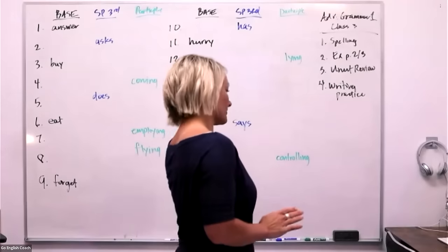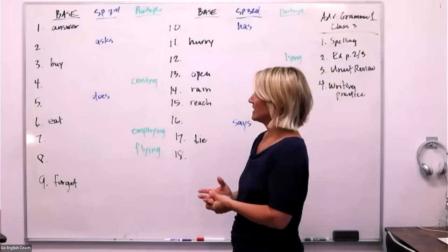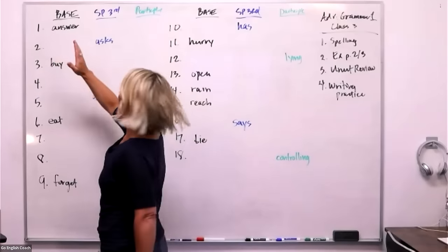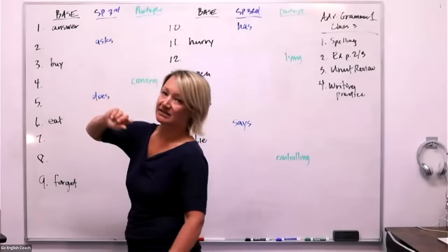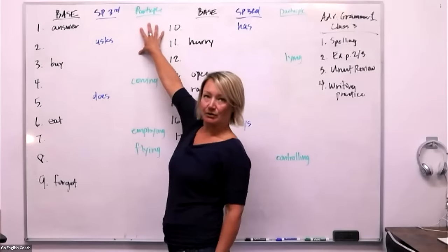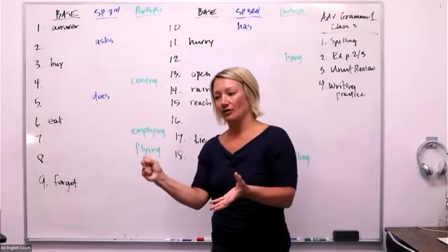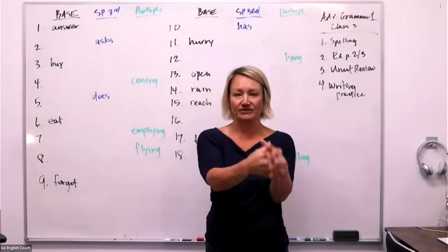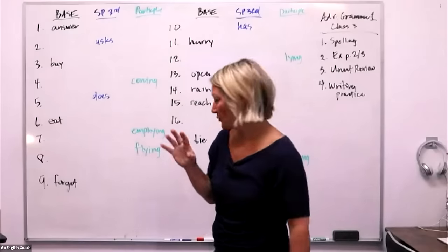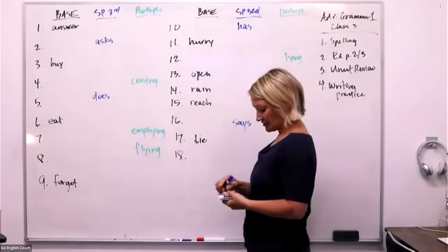Alright, let's jump in. On the board behind me are 18 verbs. I've got three categories for each verb: the base verb, the simple present third person — because in the simple present we don't change much except in that third person — and then the participle category. The participle is the 'ing' form. It's called the participle because it's not the full verb; the full verb is the form of 'to be' plus the participle.